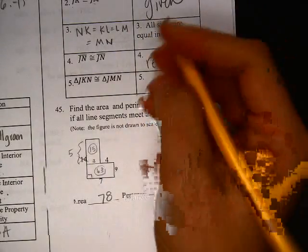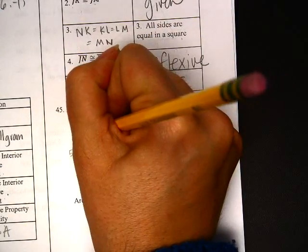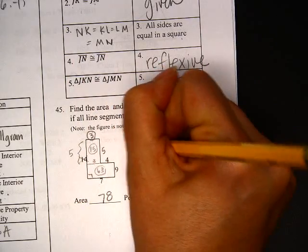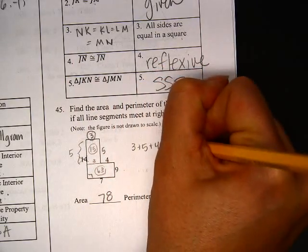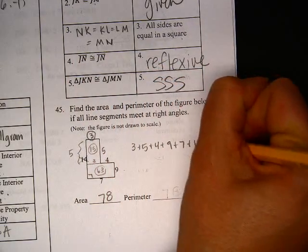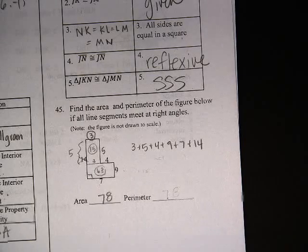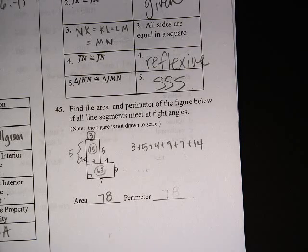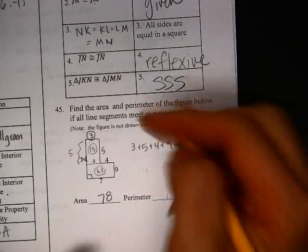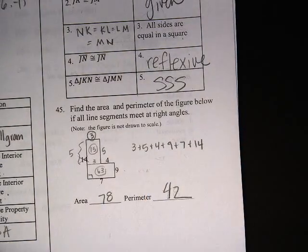For the perimeter, I needed this 5 and I needed this 3. So, I needed 3 plus 5 plus 4 plus 9 plus 7 plus 14 is all of them. 3 plus 5 plus 4 plus 9 plus 7 plus 14 is 42.